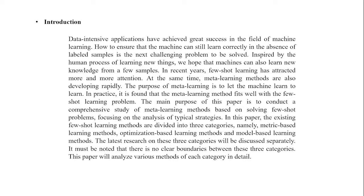The purpose of meta-learning is to let the machine learn to learn. In practice, it is found that the meta-learning methods fit well with the few-shot learning problems. The main purpose of this paper is to conduct a comprehensive study of meta-learning methods based on solving few-shot problems, focusing on the analysis of technical strategies. In this paper, the existing few-shot learning methods are divided into three categories: metric-based learning methods, optimization-based learning methods, and model-based learning methods. The latest research on these three categories will be discussed separately. It must be noticed that there are no clear boundaries between these three categories. This paper will analyze the various methods of each category in detail.